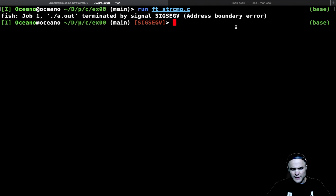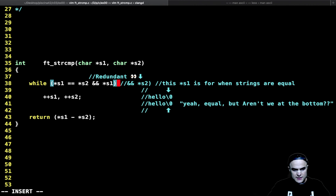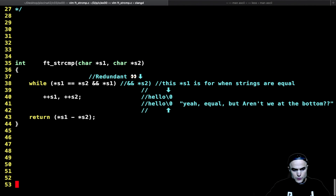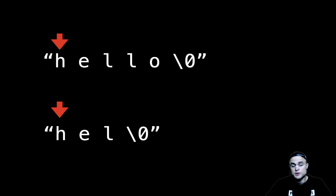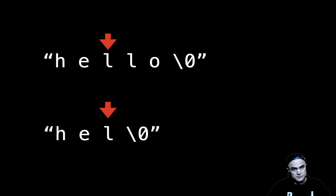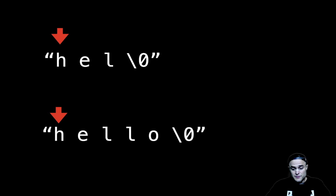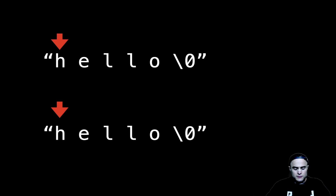Without the *s1 check we get a segmentation fault. With it included, it works correctly. Let me explain why. For two different strings like 'hello' and 'house', we iterate: h equals h, e equals e, l equals l — then we stumble upon two different chars, the while loop ends, and we return 108 (l) minus 0, which is 108. The flipped case gives minus 108. That part is easy.